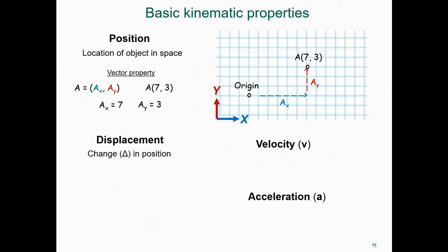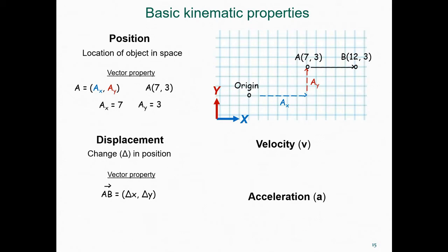Displacement is the change in position. We'll often use the delta symbol to stand for a change in a particular quantity. Here we see a displacement from A to B in the graph. Displacement is also a vector quantity — we can represent this with the symbol AB with an arrow on top. We define the displacement from A to B in terms of the change in the x-position coordinates and the change in the y-position coordinates. So delta x is the difference in the x values between B and A, which is plus 5.